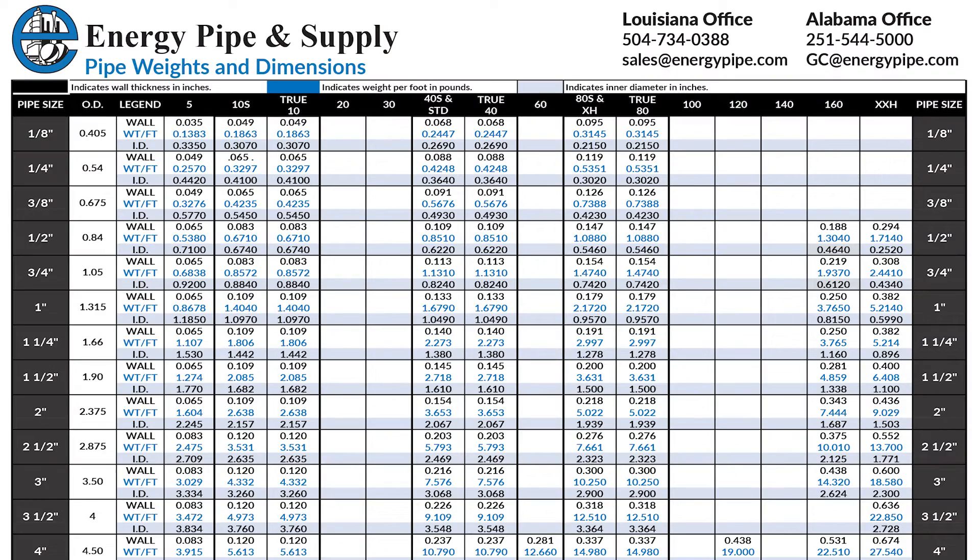If you go out and measure the size of pipe and you look at 3 inch pipe, the outside diameter from one side to the other is going to be three and a half inches. But they were looking for that ID to be three inch. So when you're trying to put together your sizing for pipe, you can look at a general pipe chart and it's going to show you the OD.